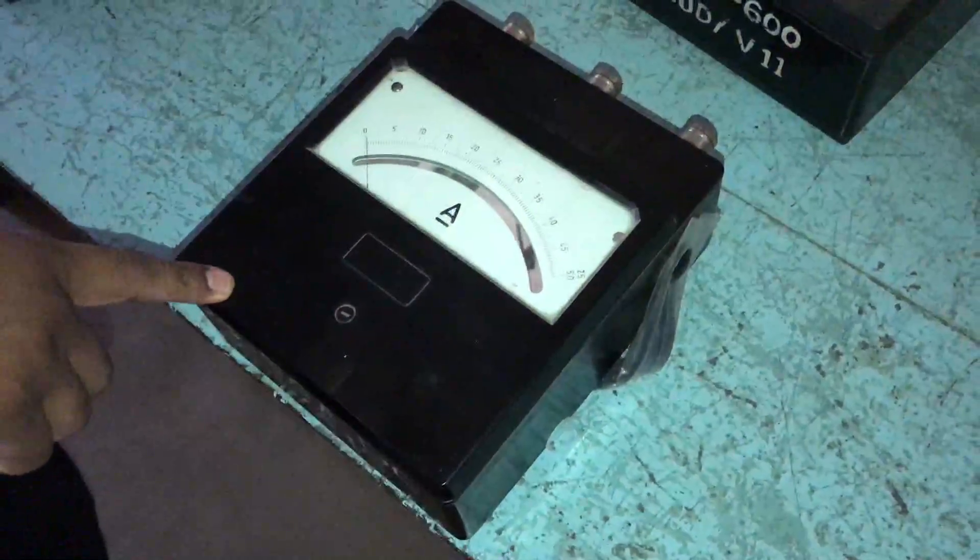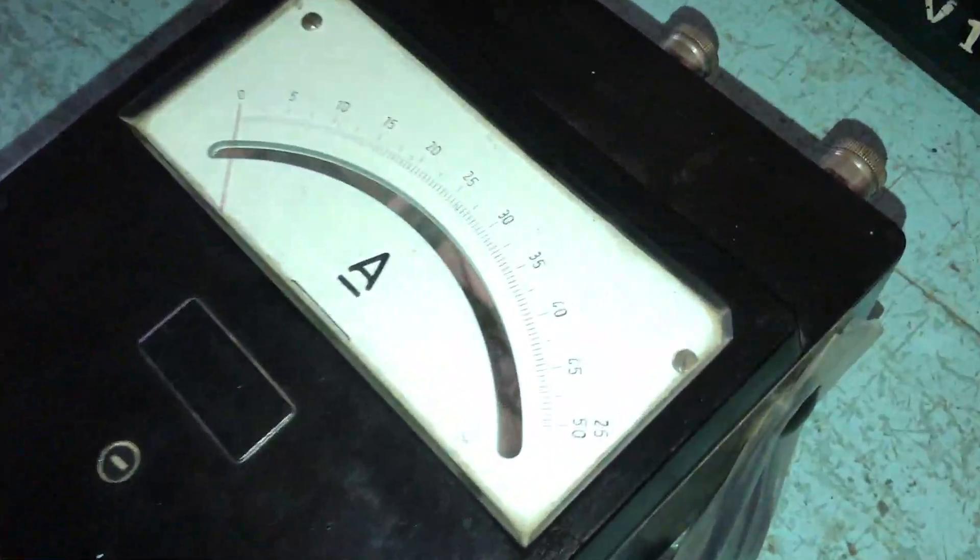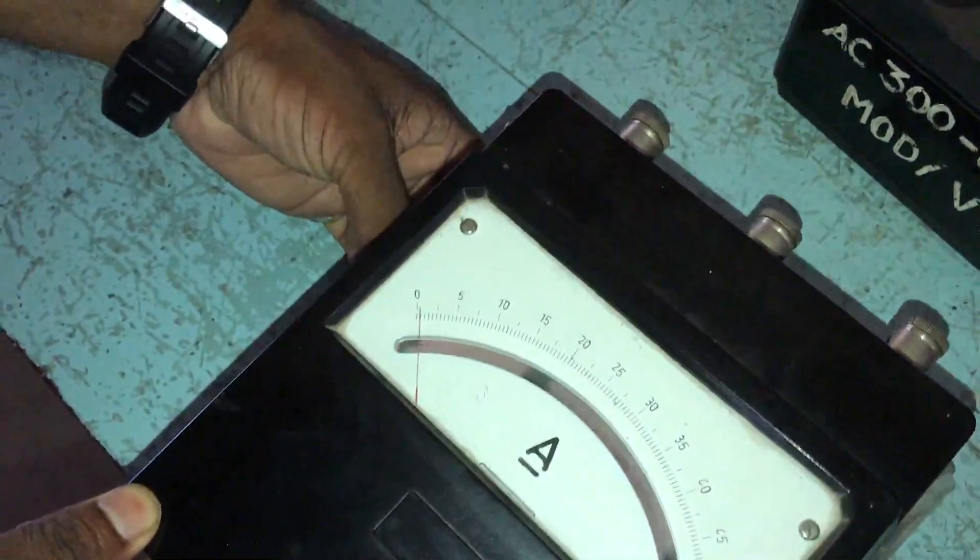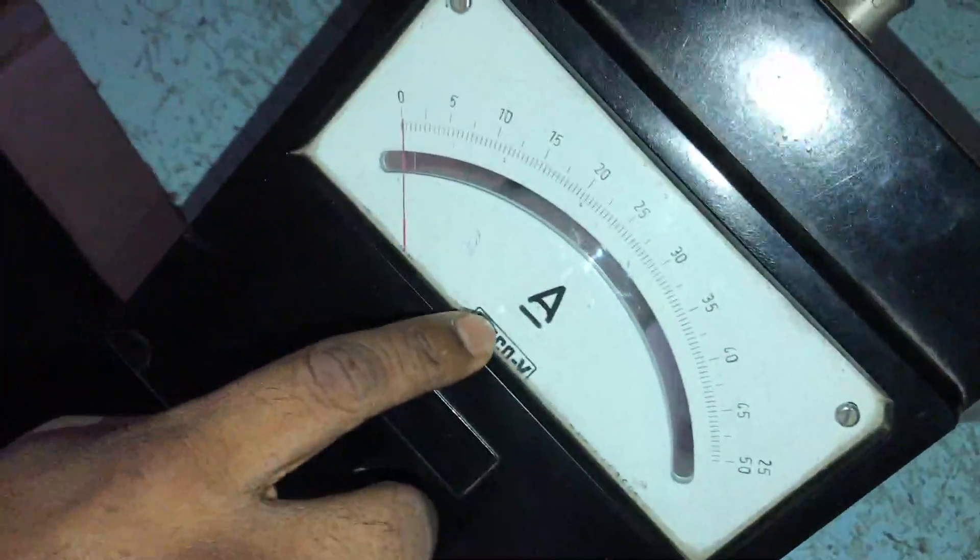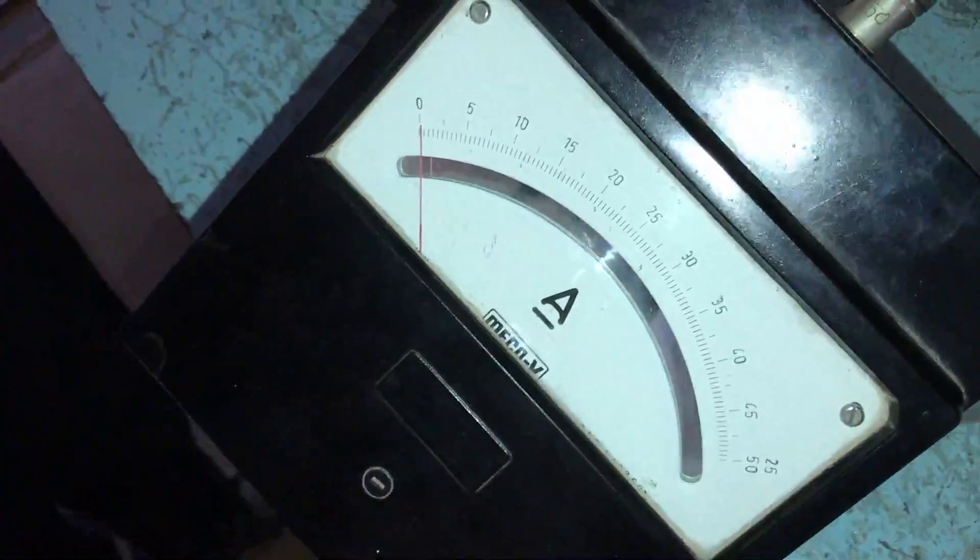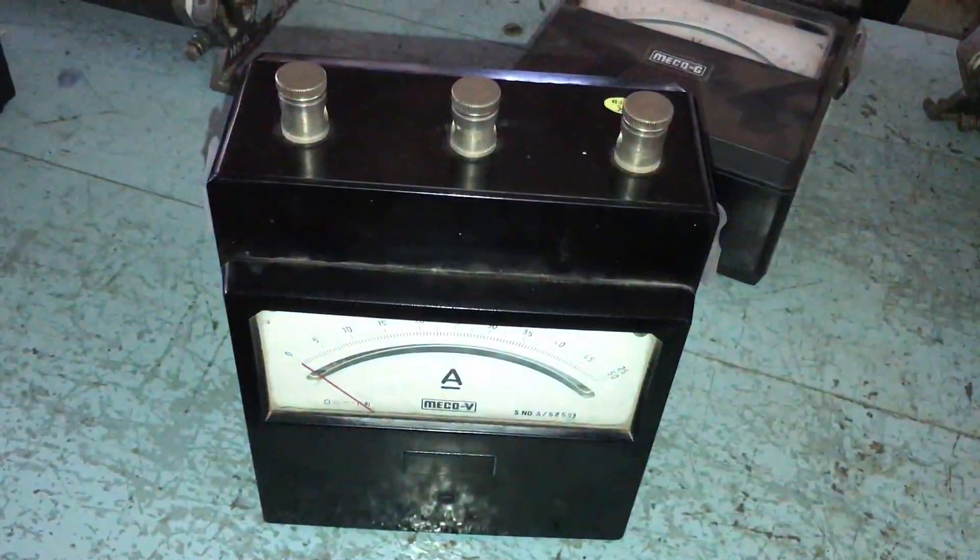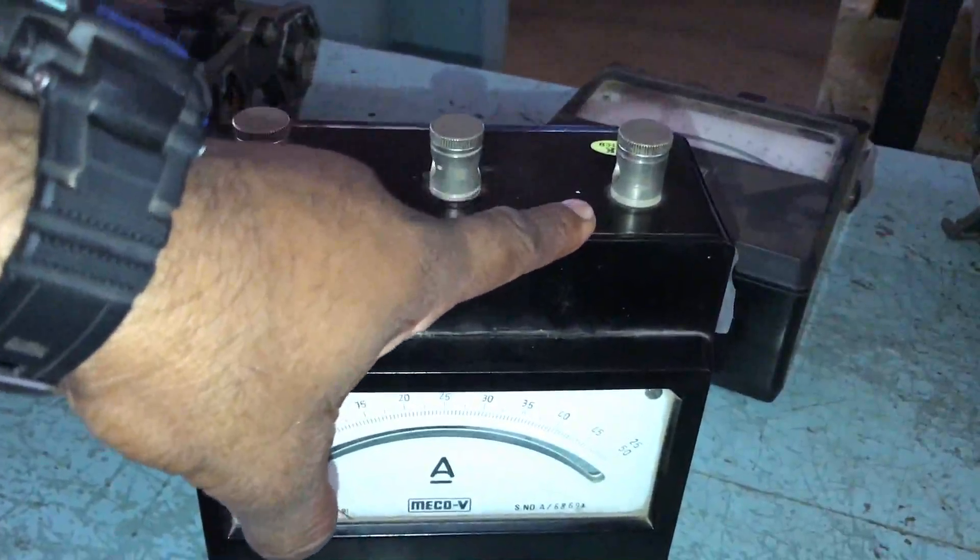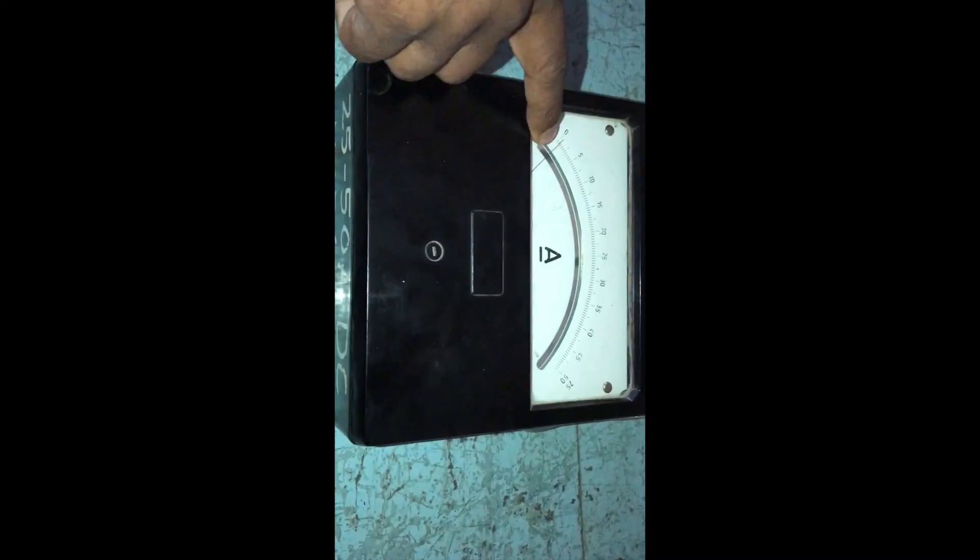This is the ammeter. Ammeter is used for measuring current. It is always connected in series with the circuit. This instrument is a low resistance ammeter used only for DC supply. This DC supply indicates the underlying. This is the common point. This is the variable point. This is 50 Ampere, then 25 Ampere. This point is to adjust the dial.